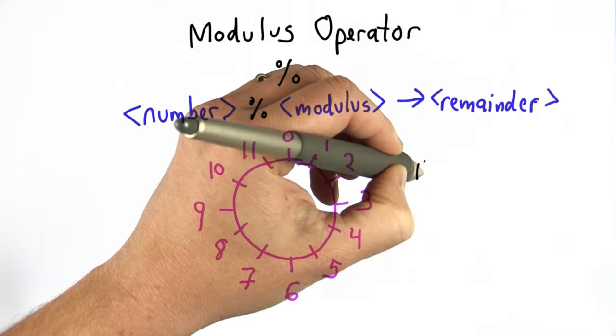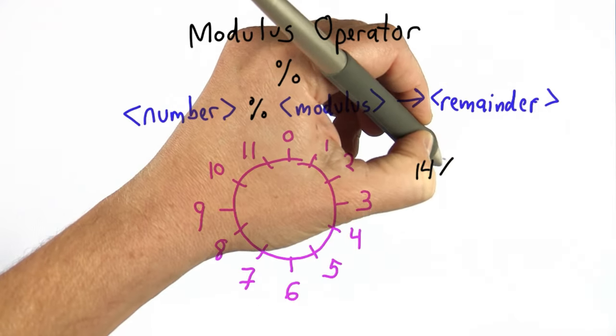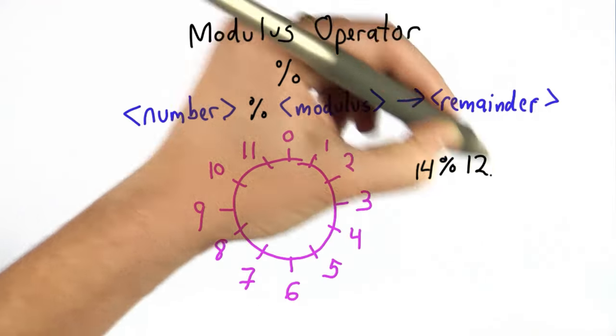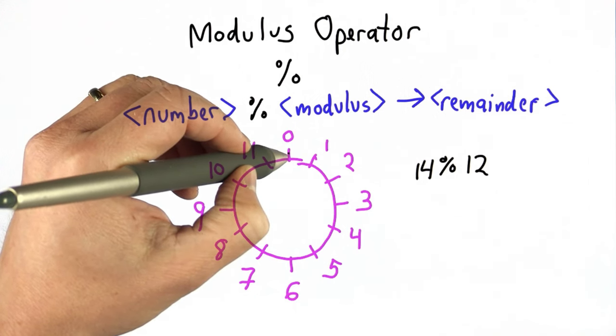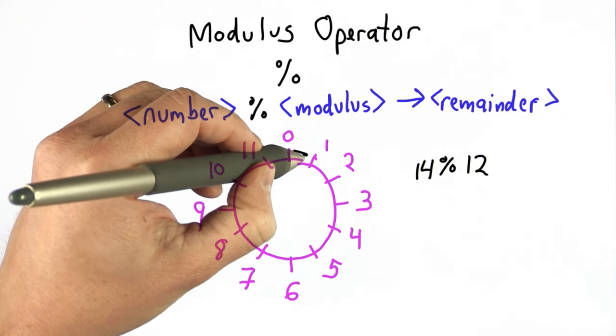So if we were to evaluate 14 modulo 12, what that would mean is, well, if we start from 0 and we make 14 steps...